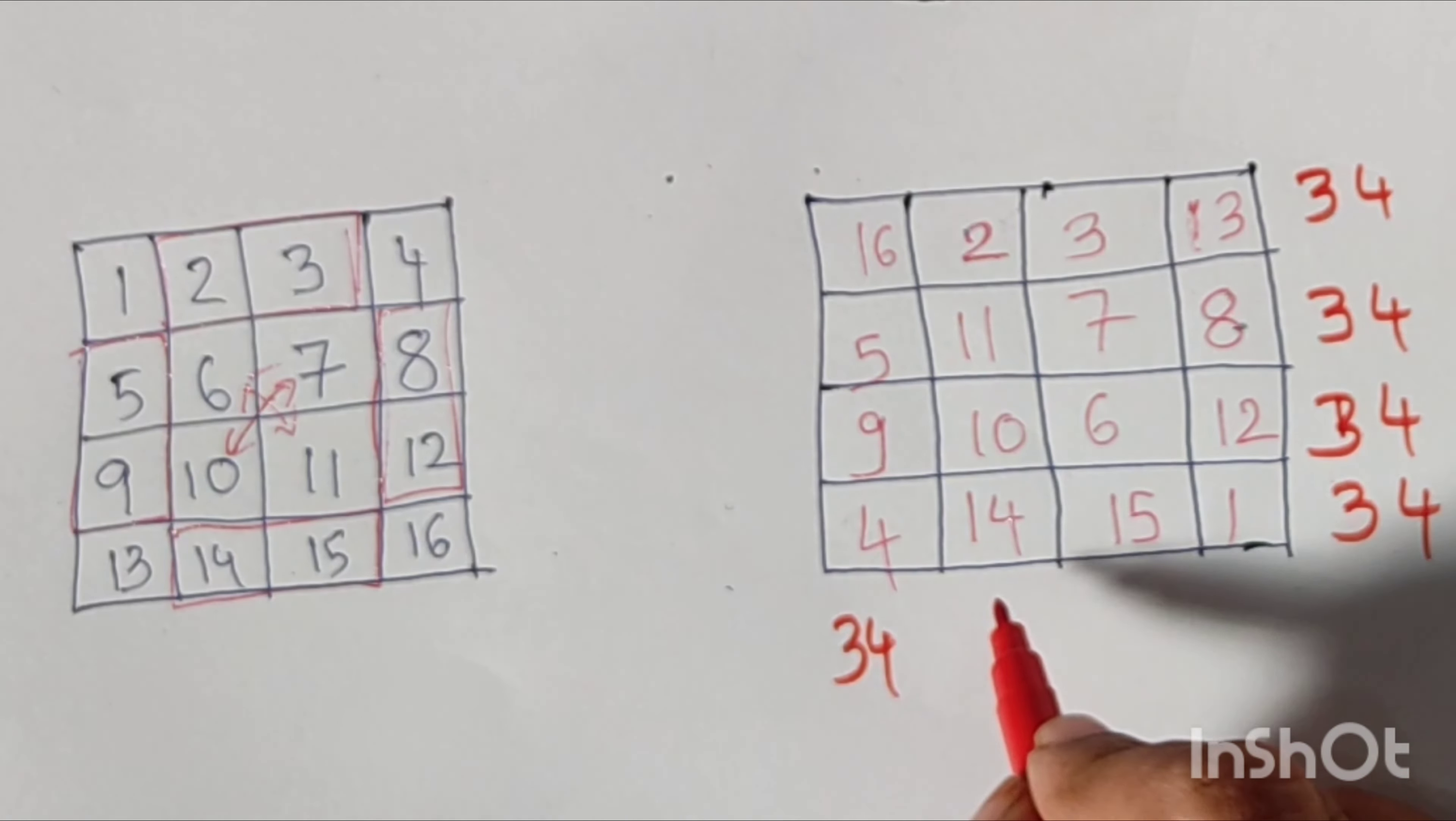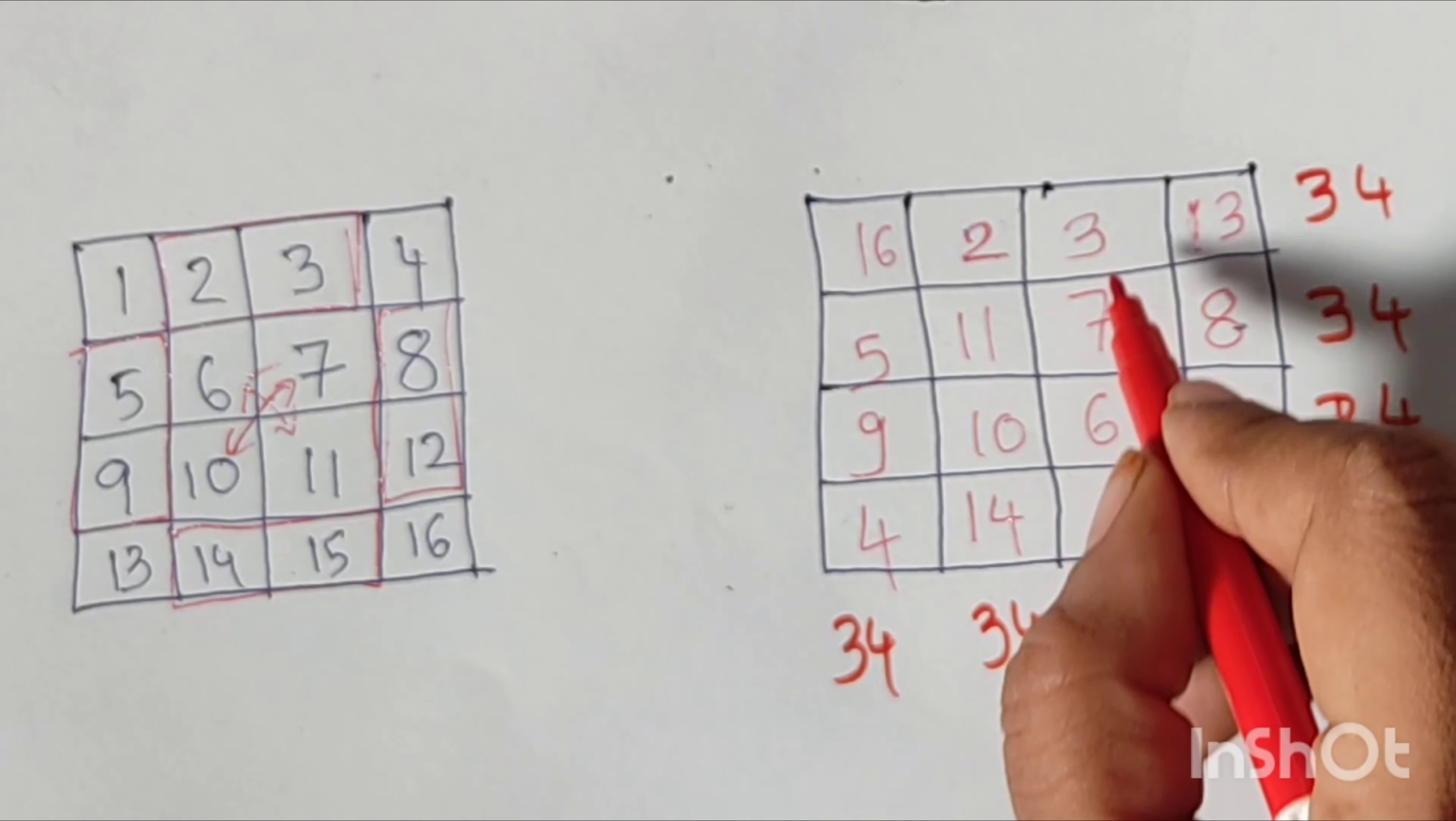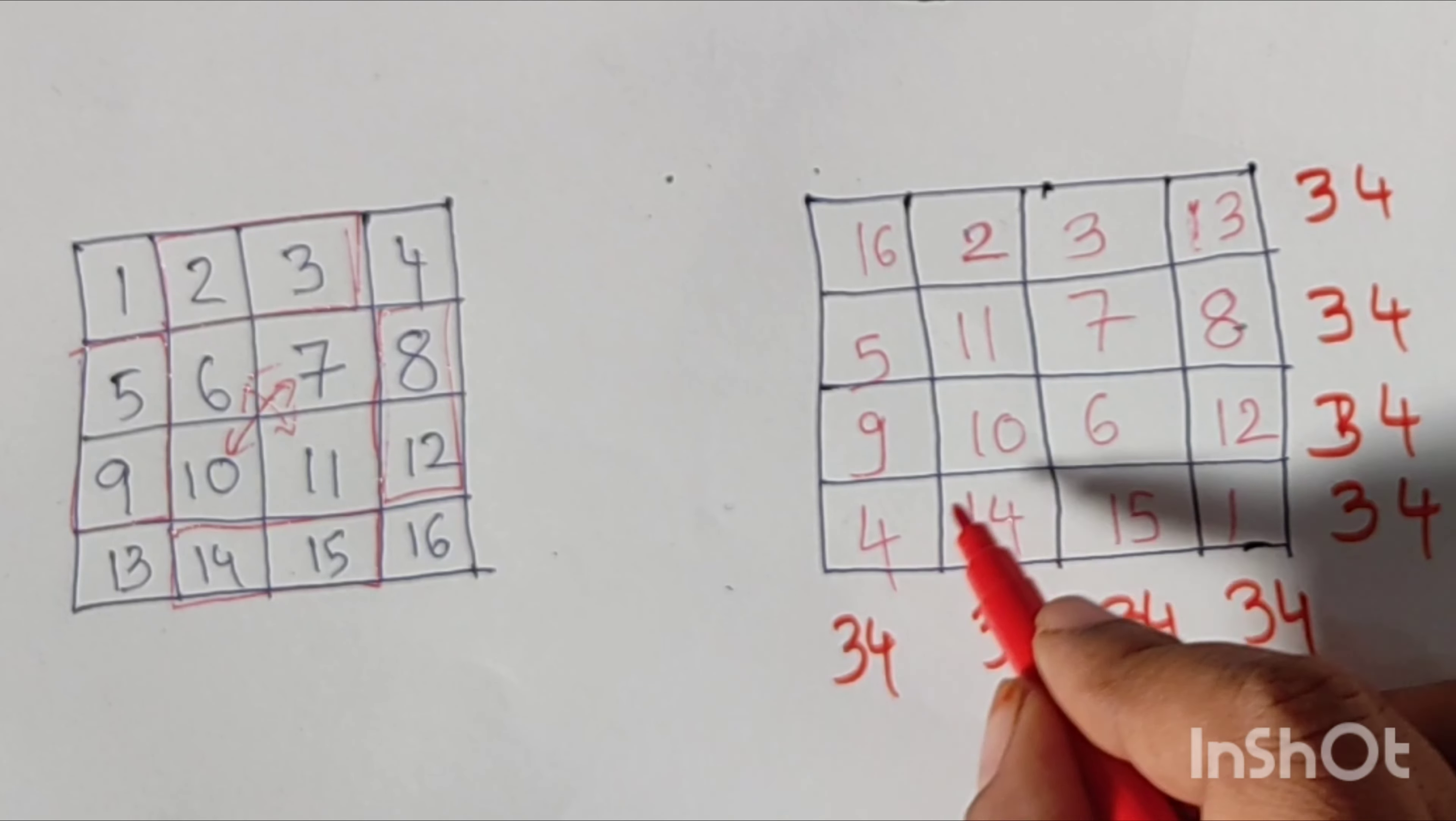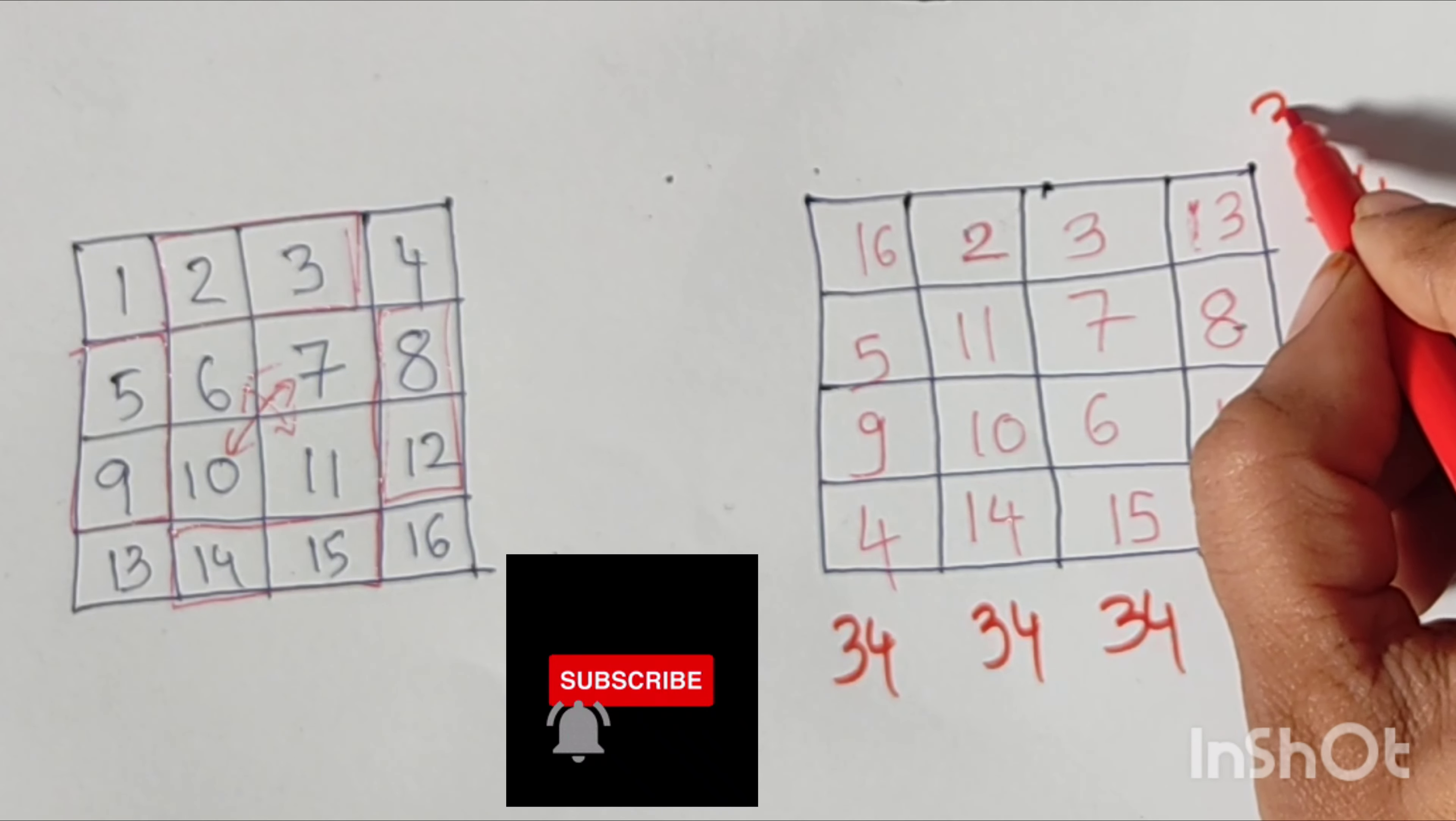And the columns. First column total is 34 and second column sum is 34. Third column and fourth column sum is also 34.